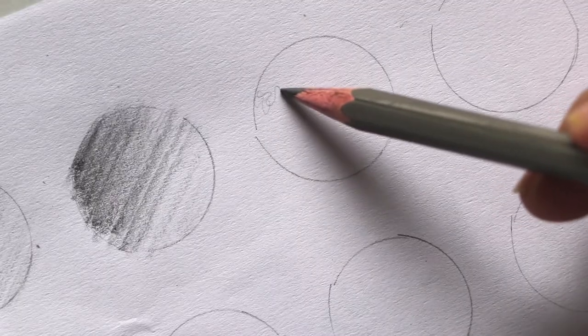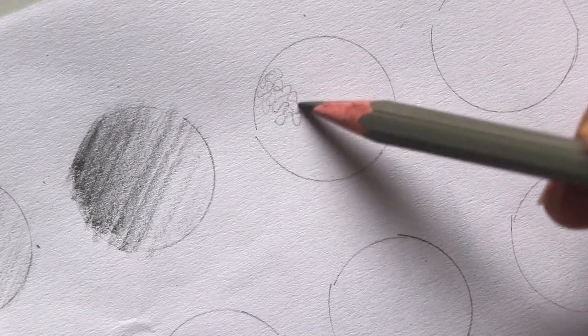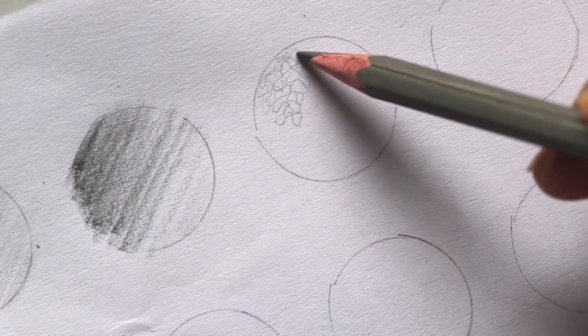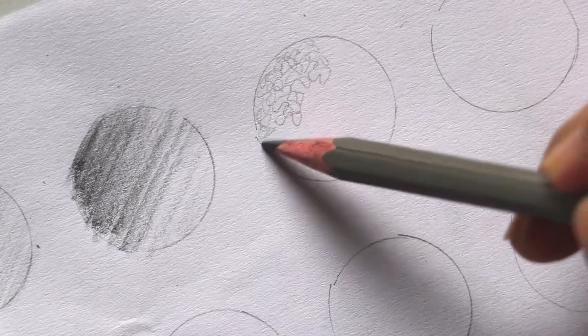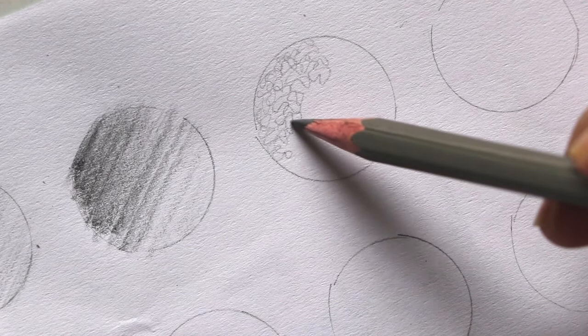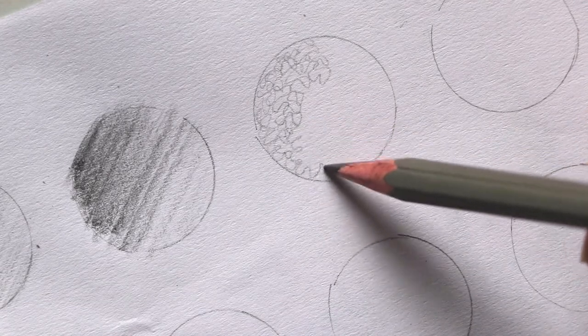Now it's a scribble kind of technique where you have to just make S, C letters out of your pencil. Here you can apply a little pressure. So first the light tone we have to create.